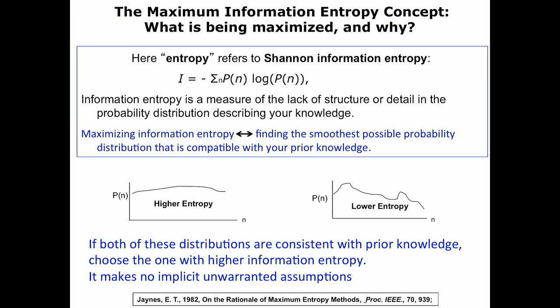The MaxEnt principle is a means of going from prior knowledge to inferred probability distributions. By entropy we don't mean thermodynamic entropy — we mean Shannon information entropy. There's a huge similarity in structure between Shannon information entropy and Gibbs thermodynamic entropy, but they are conceptually different. The Shannon formula for information entropy is a sum over n of p(n) log p(n). It's a measure, really, of ignorance — it's a measure of what we don't know after we know the probability distribution.